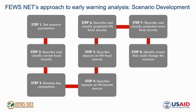FEWS NET's approach to early warning analysis relies on an eight-step scenario development process within a livelihoods framework that allows us to understand how households typically access food and income to meet their basic needs. We start our analysis by gathering data and information to understand households' current access to food and income and any gaps they may be facing, and we use this to classify current food security outcomes.